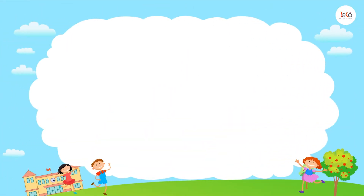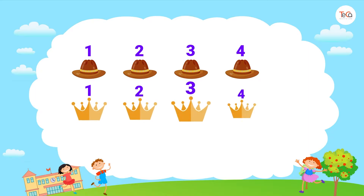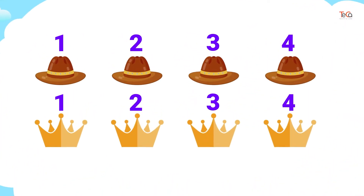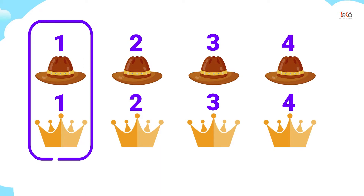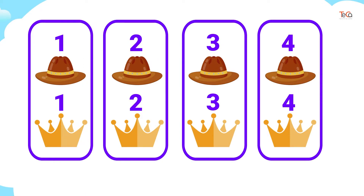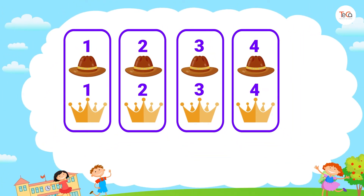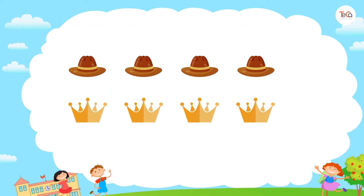Next, we have four hats and four crowns. If we pair a hat with a crown, then each hat is paired with a crown, because there is an equal number of hats and crowns.